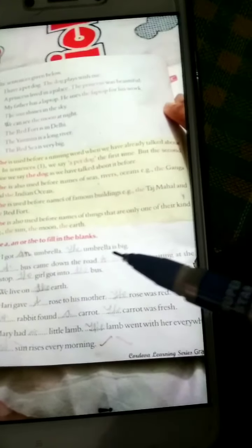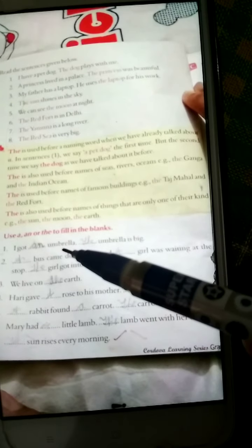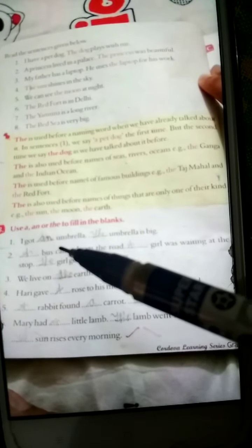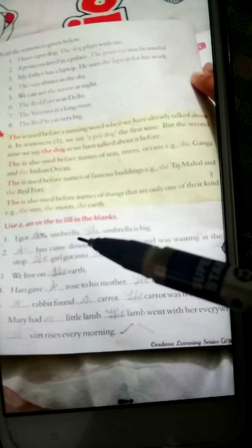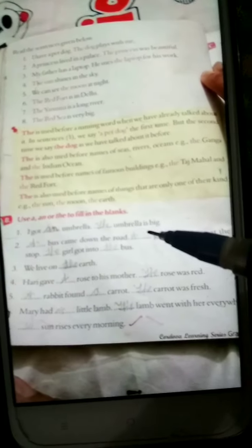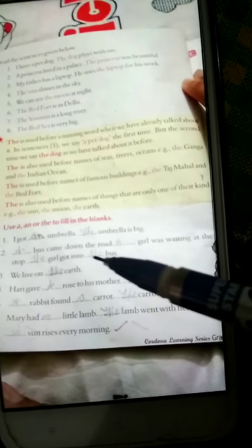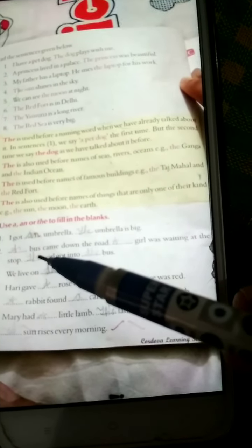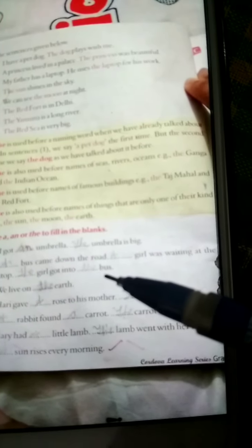I got an umbrella. The umbrella is big. I got an umbrella, the umbrella is big. Next is: bus came down the road. Bus, what is the sound? 'B'. We will write here 'a'. A bus came down the road.